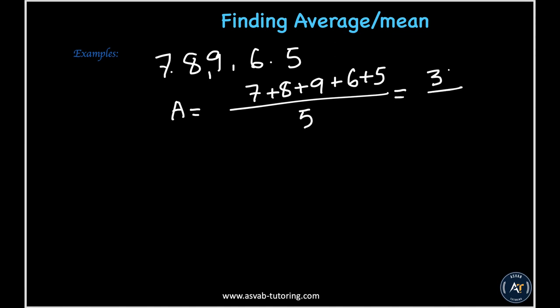Adding them together gives 35, so 35 over 5, and the average is 7. Let's do another example with fractions.